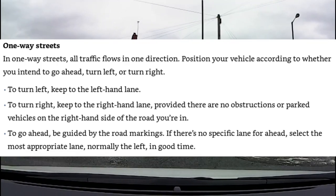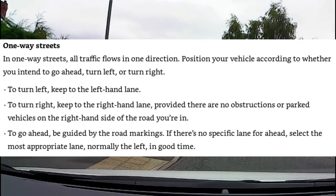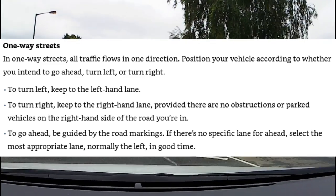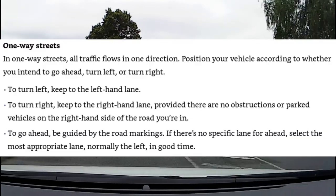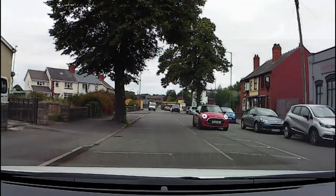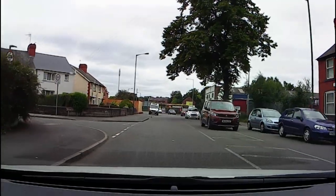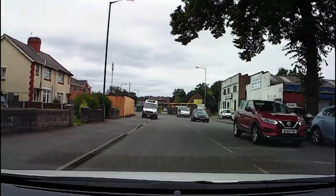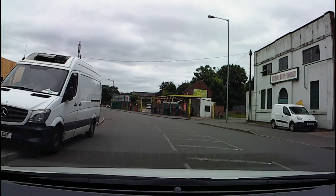If there's no specific lane for ahead, select the most appropriate lane. That could be the left lane or towards the middle of the road — probably not towards the right unless you're going ahead into maybe a staggered junction. Follow the road markings, get into the correct lane as soon as possible, and stay in that lane. Also watch for drivers making sudden lane changes.